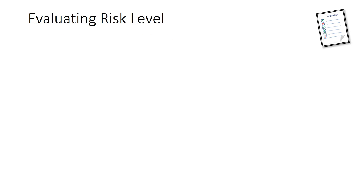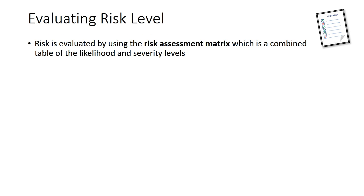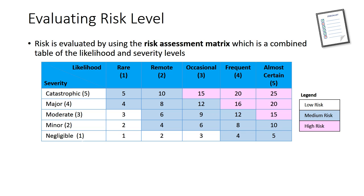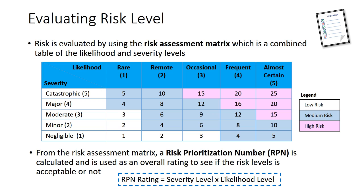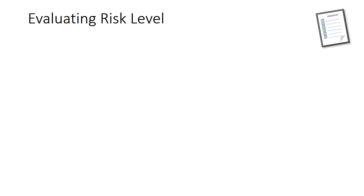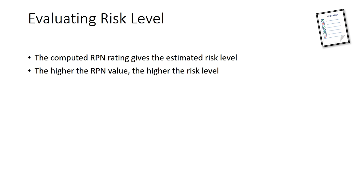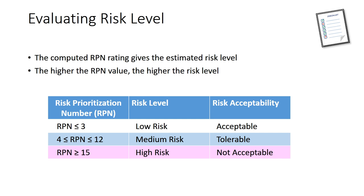Risk is evaluated using the risk assessment matrix, which is a combined table of likelihood and severity levels. From this matrix, a Risk Prioritization Number (RPN) is calculated as the product of the severity level multiplied by the likelihood level, and is used as an overall rating to determine if the risk level is acceptable. The higher the RPN value, the higher the risk level. An RPN of 3 or less gives a low risk level and is acceptable; however, an RPN of 15 and above is high risk and not acceptable.